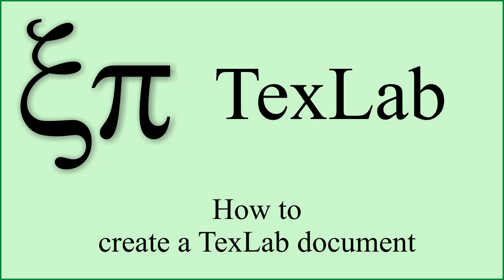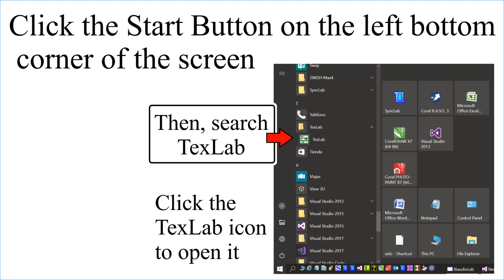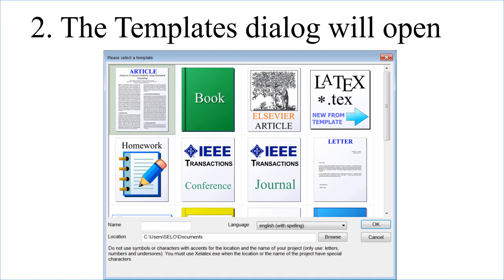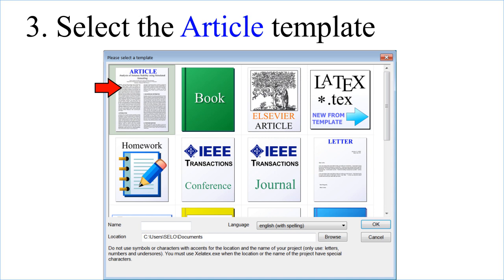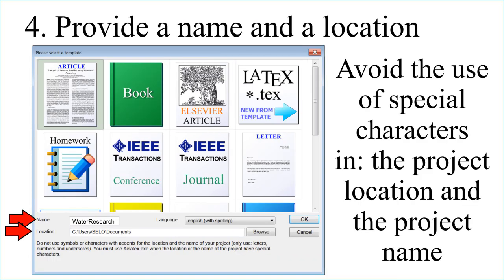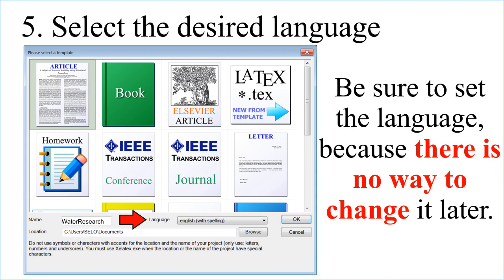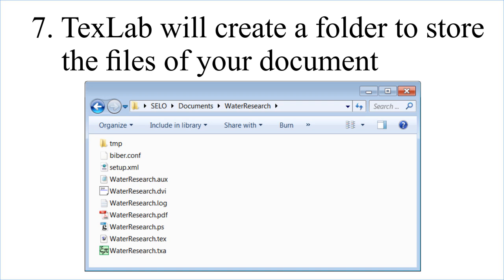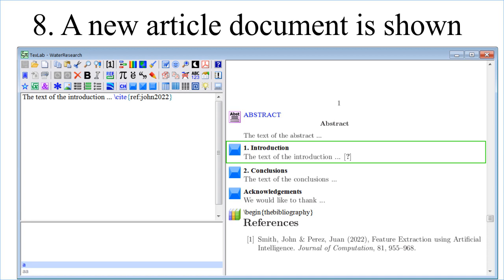To create a TeXstudio document, click the Start button, then search for TeXstudio and click the TeXstudio icon to open it. From the toolbar, click the New button. The Templates dialog will open. Select the Article Template. Provide a name and a location — avoid special characters in the project location and name. Select the desired language; be sure to select it because there is no way to change it later. Click OK when ready. TeXstudio will create a folder to store the files of your document, and a new article document will be shown.